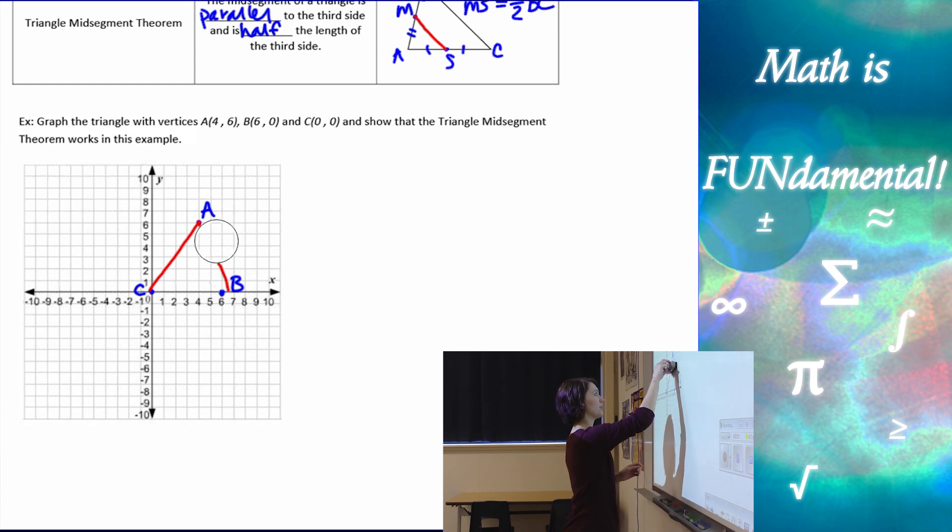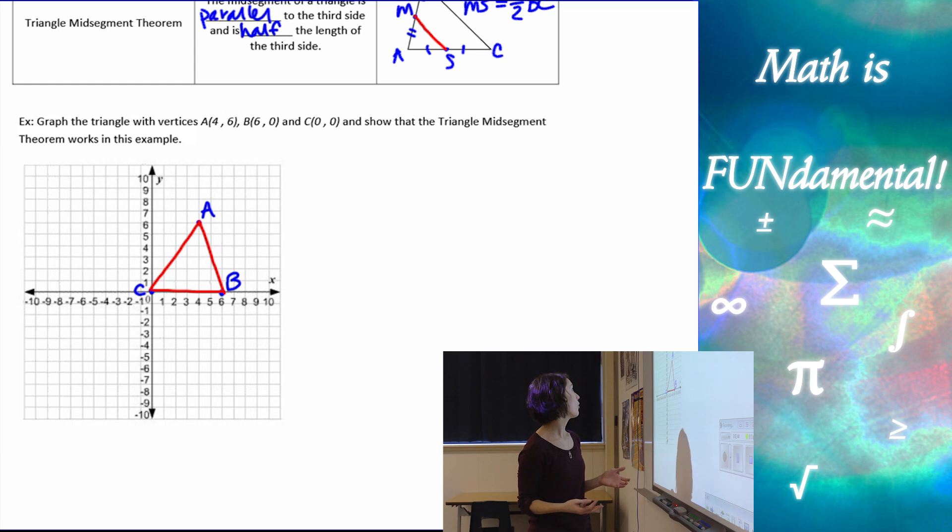Oops, except we should probably draw straight lines. Try that again. B goes there. Alright, so here's my triangle ABC, and it just wants me to show an example of why the mid-segment theorem works.